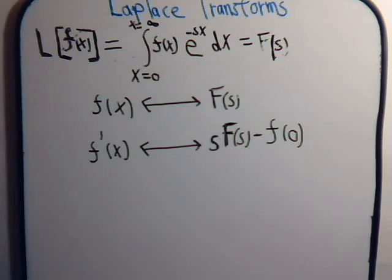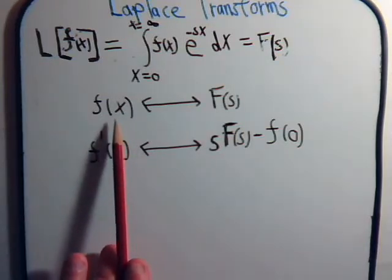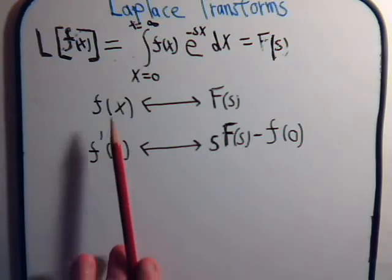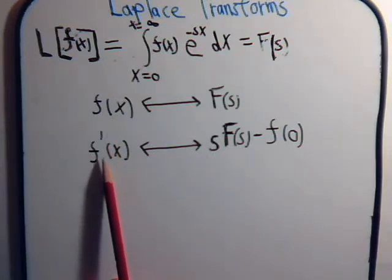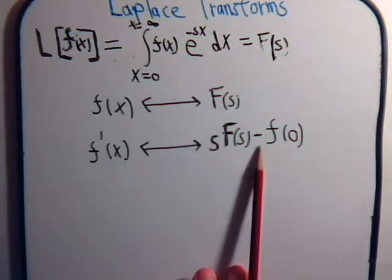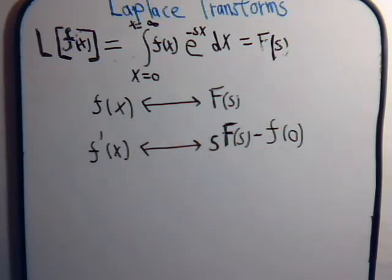In the last couple of videos, we've been working with not only the Laplace transform and how to find the Laplace transform of different types of basic functions, but also we've derived this relationship: if we have some function f(x) and its corresponding Laplace transform, then if we take the derivative of this function, its corresponding Laplace transform is equal to s times this Laplace transform minus the function evaluated at zero. Now let's see how we can use this relationship to derive the Laplace transform of some more functions without having to go through the integration process.